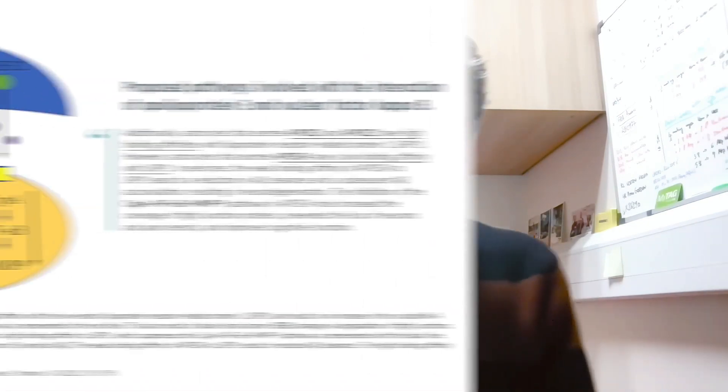APOE4 has a different affinity to the LRP1 receptor. You have less chance to bind to LRP1, which will induce a cascade within the pericytes involving NF-κB, cyclophilin A, which then will lead to expression of MMP9 from pericytes and other glial cells. So basically, if you have the APOE4 gene, you will induce much more of that cascade than people having APOE3, because APOE4 doesn't bind to the LRP1 of pericytes.